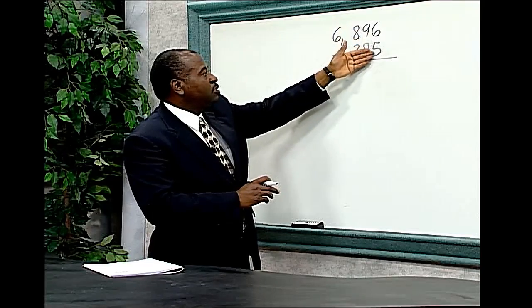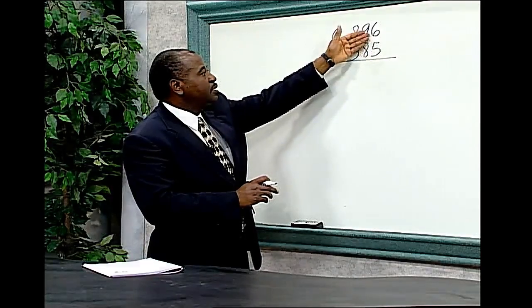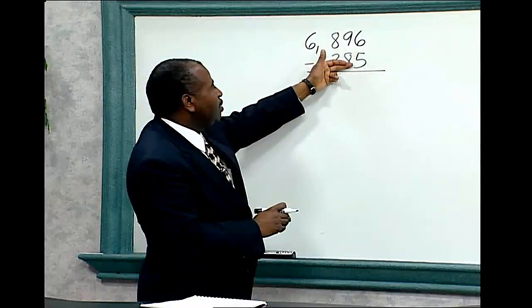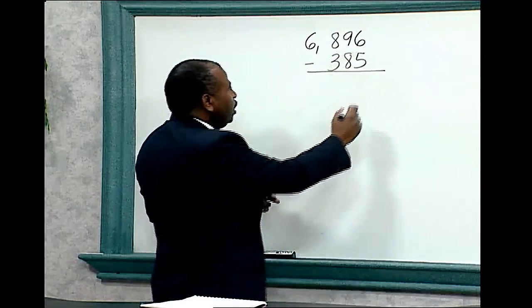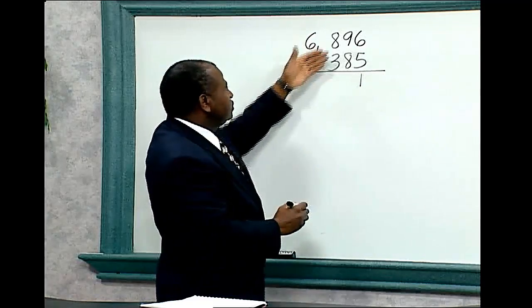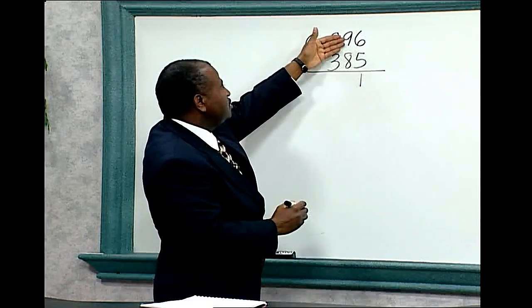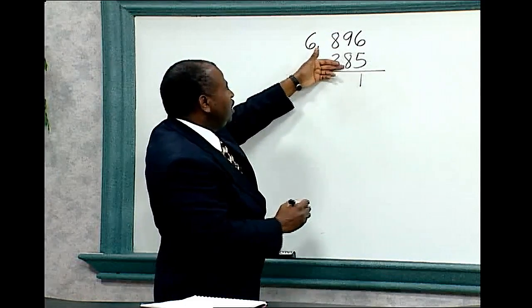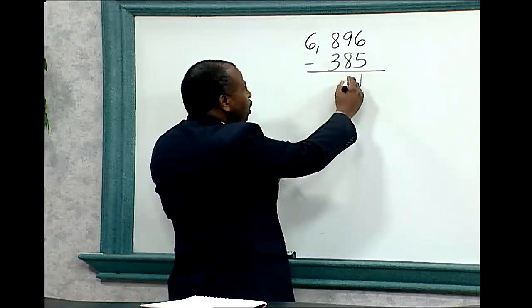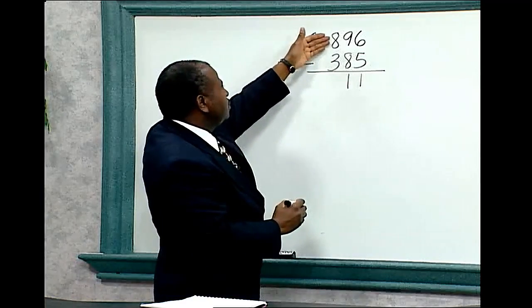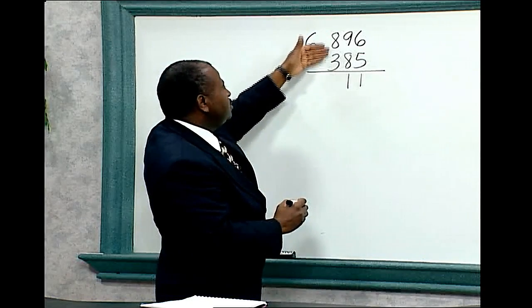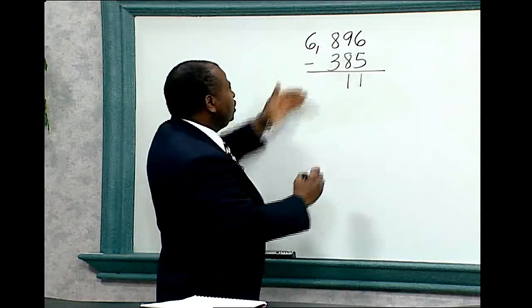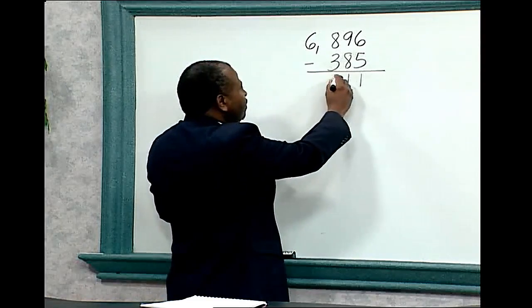Let's start with the ones column: 6 minus 5 equals 1. The tens column: 9 minus 8 equals 1. The hundreds column: 8 minus 3 equals 5.